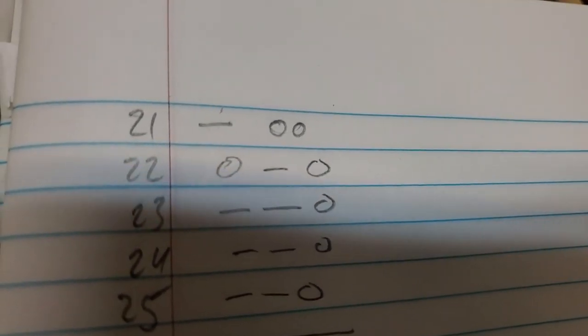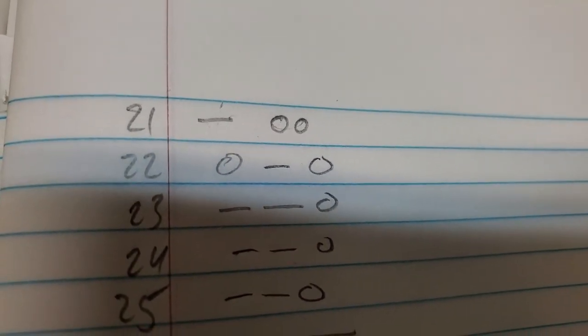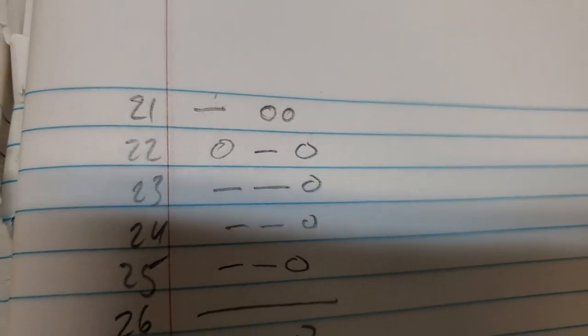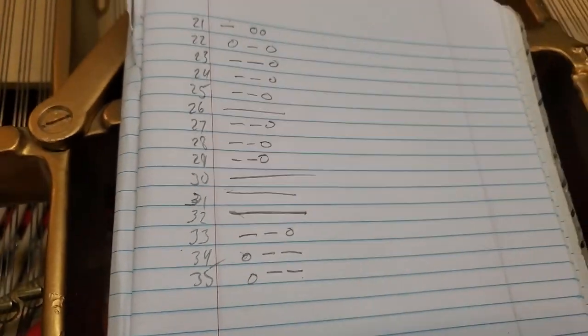So immediately, you know, like on number 22 there, the middle string is touching. And so anyways, that's very helpful. So now I can pull the action out one time and then make an adjustment on all these notes with one pull of the action.